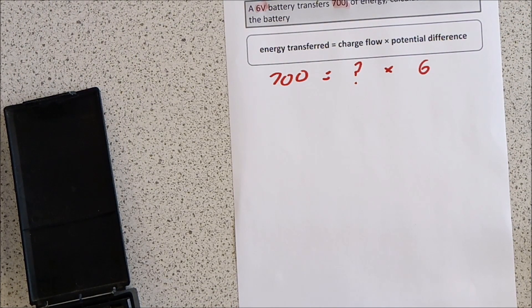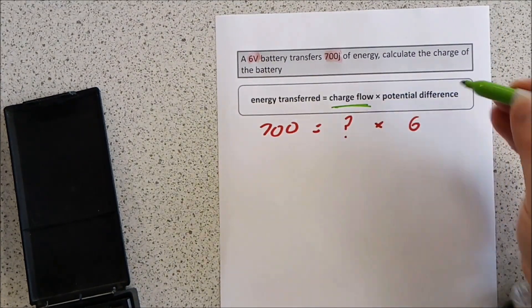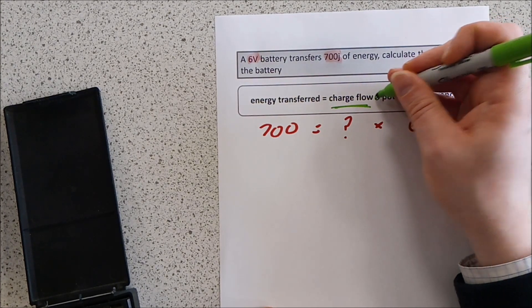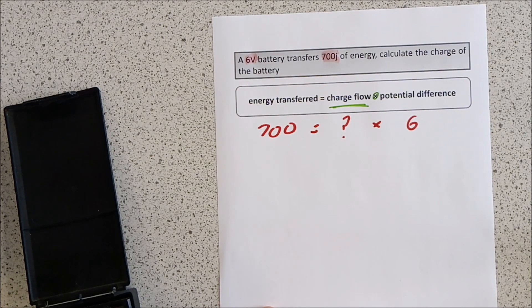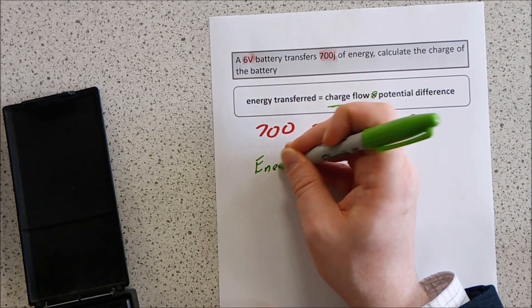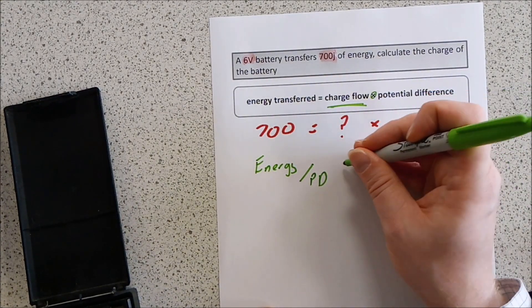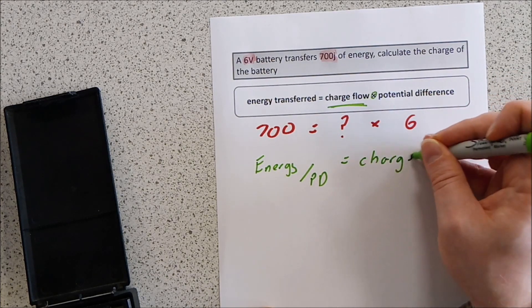We then rearrange this equation. We need to leave the charge by itself, which means we need to move the potential difference. If the potential difference is a multiply on this side, moving it to the other side makes it a divide. So we end up with: energy divided by potential difference equals charge.